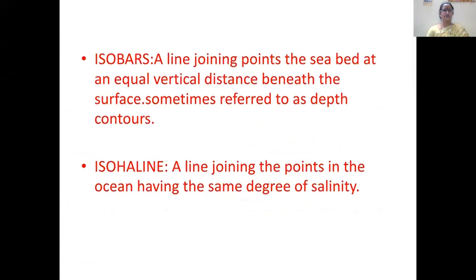Two important definitions: An isobath is a line joining points on the sea bed at an equal vertical distance beneath the surface, sometimes referred to as depth contours - similar to contour lines we've learned about previously. An isohaline is a line joining points in the ocean having the same degree of salinity. Where we find the same degree of salinity, a line joining those points of that particular ocean is called an isohaline.